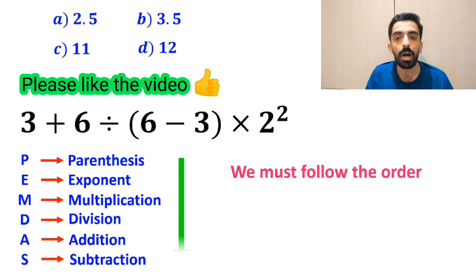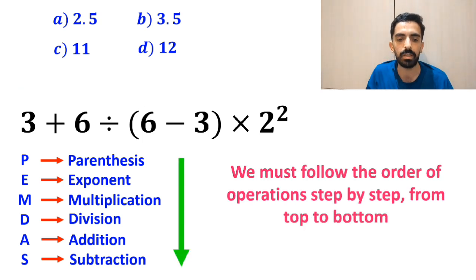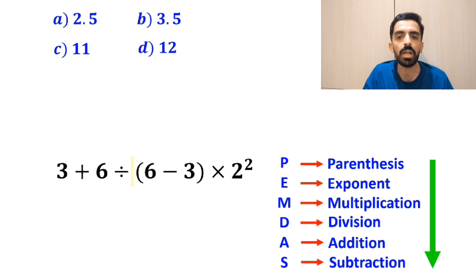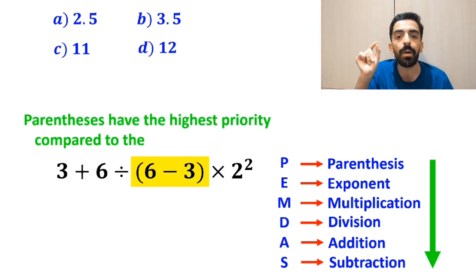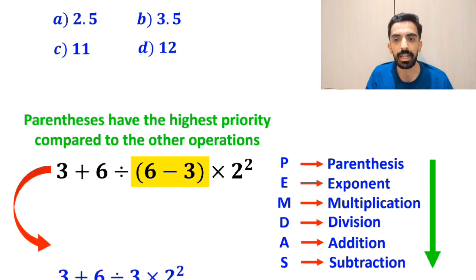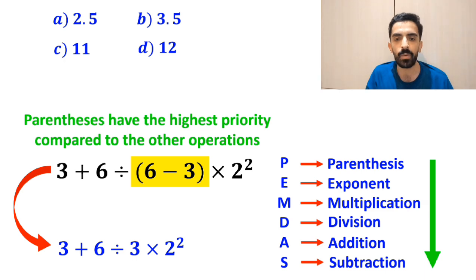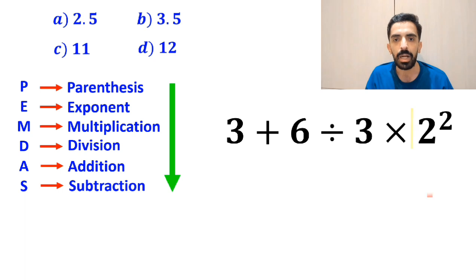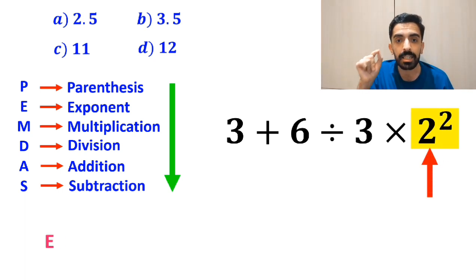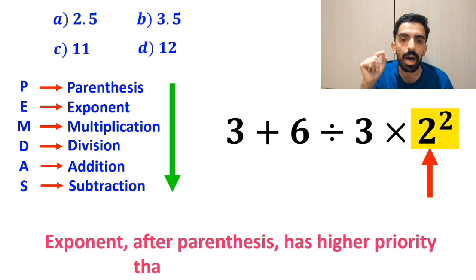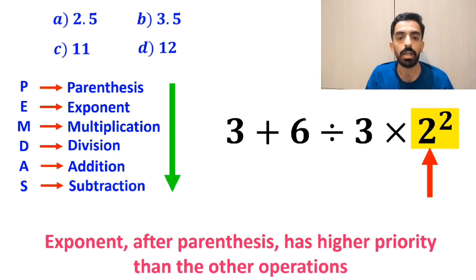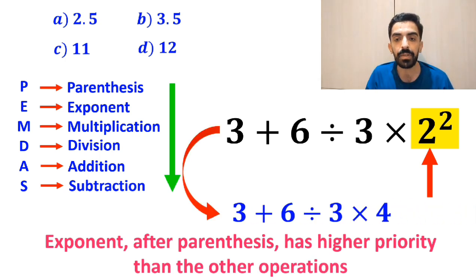We must follow the order of operations step-by-step from top to bottom. We'll start with the parenthesis first, because parenthesis have the highest priority compared to the other operations. So, instead of this expression, we can write 3 plus 6 divided by 3 times 2 to the power of 2. In the next step, we go to the exponent, because exponent after parenthesis has higher priority than the other operations. So, this expression simplifies to 3 plus 6 divided by 3 times 4.